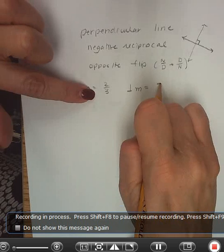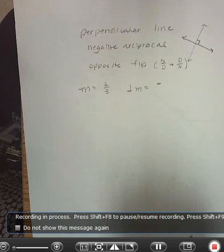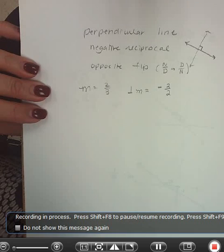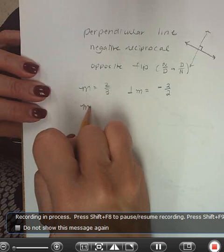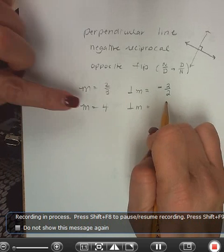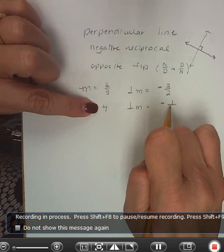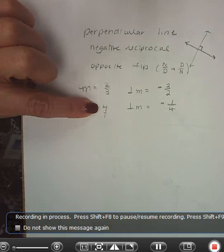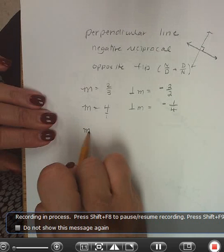If my slope was 4, my perpendicular slope then, negative and flips it to 1 fourth, because remember he's out of 1 hiding underneath him. If my slope was negative 5 thirds, my perpendicular slope takes its opposite, so now it's positive, and flips it to make it there.